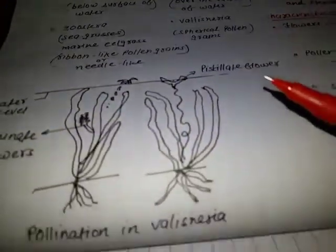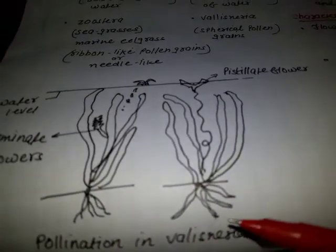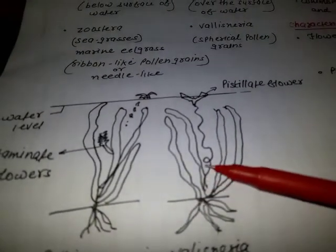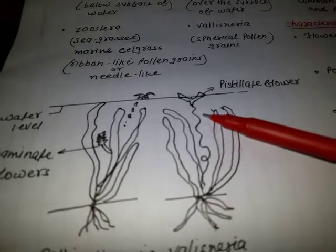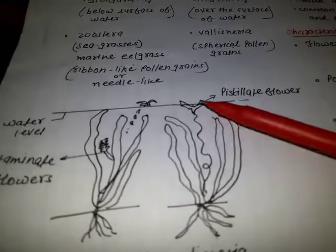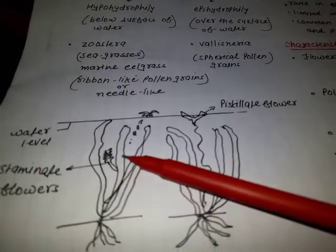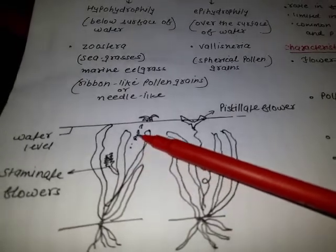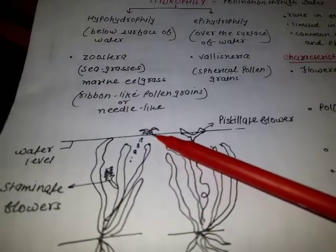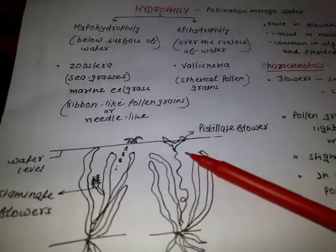This diagram shows pollination in Vallisneria. The female flowers reach the surface of the water through a long stalk, and the male flowers and pollen grains also reach the surface of the water, where pollination takes place.